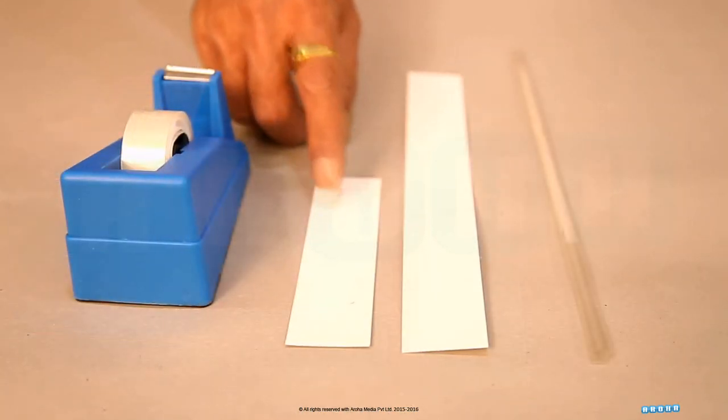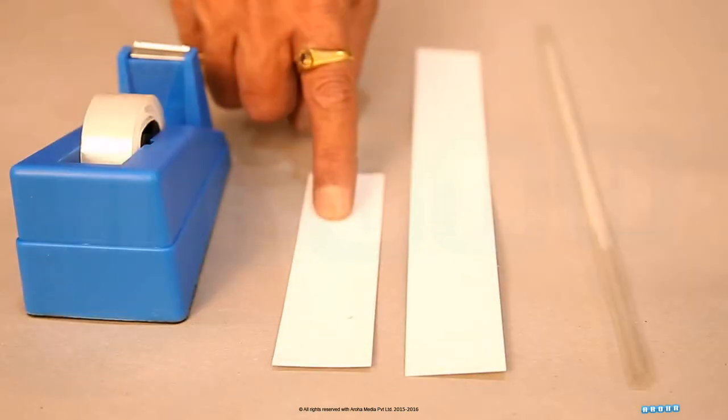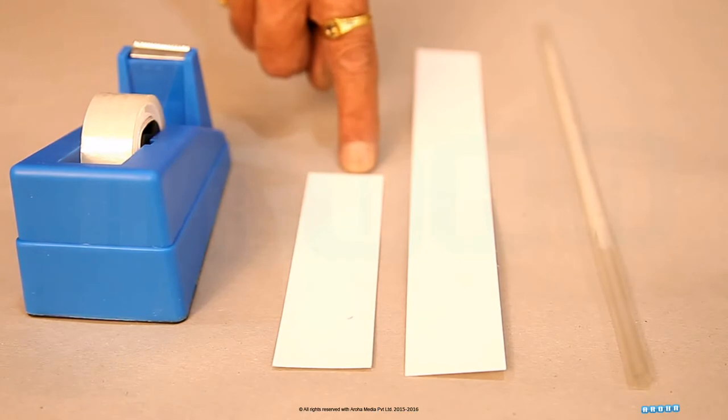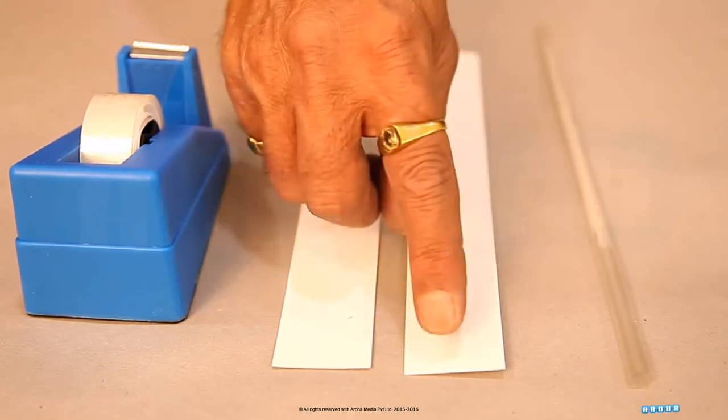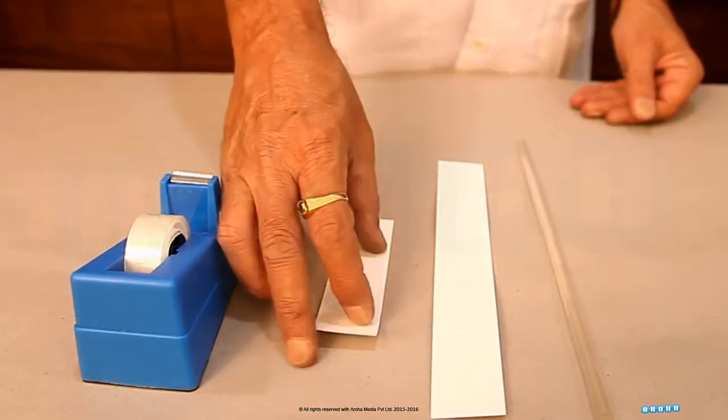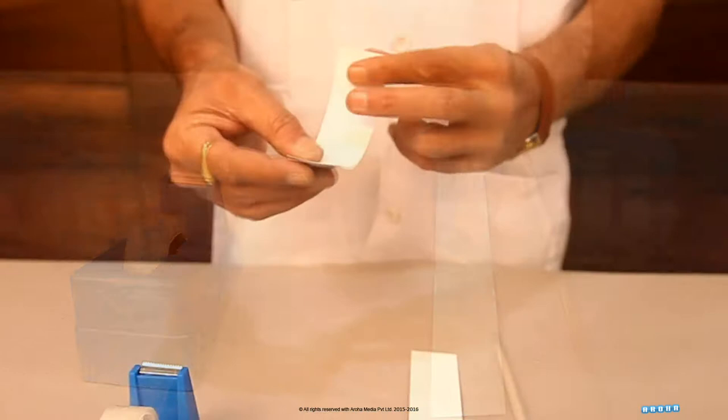Take two strips of card sheet - one is 3 centimeters by 12 centimeters and another is 3 centimeters by 24 centimeters. Now make an O shape out of these strips and stick them.